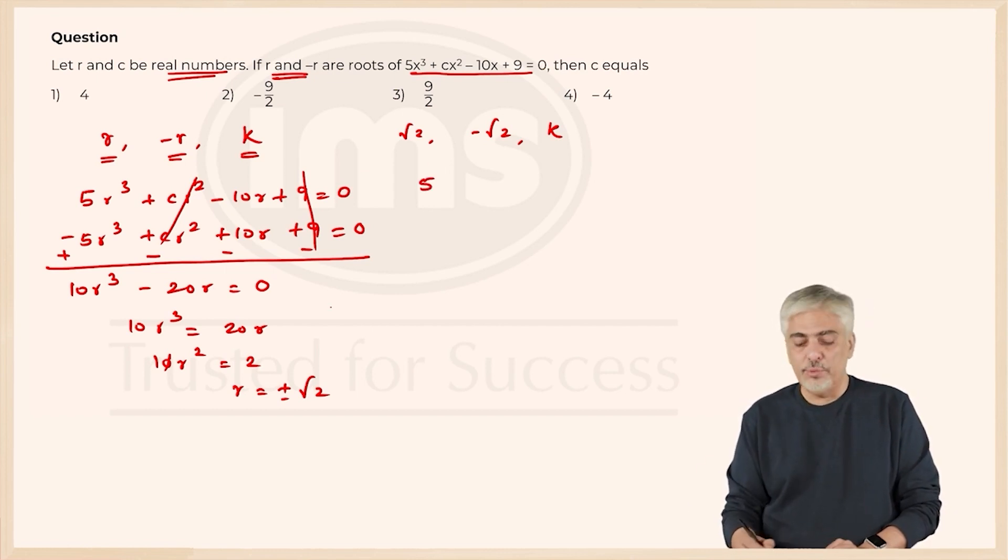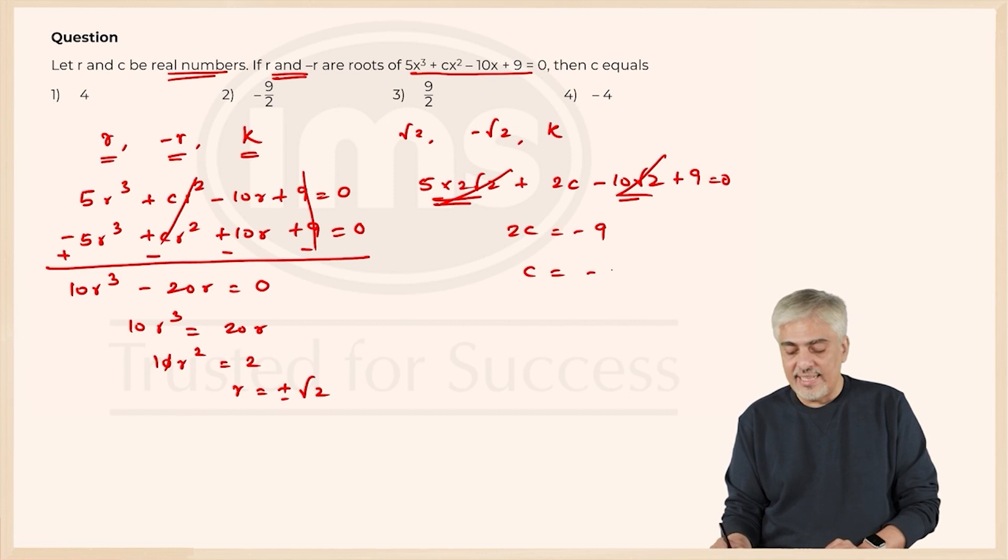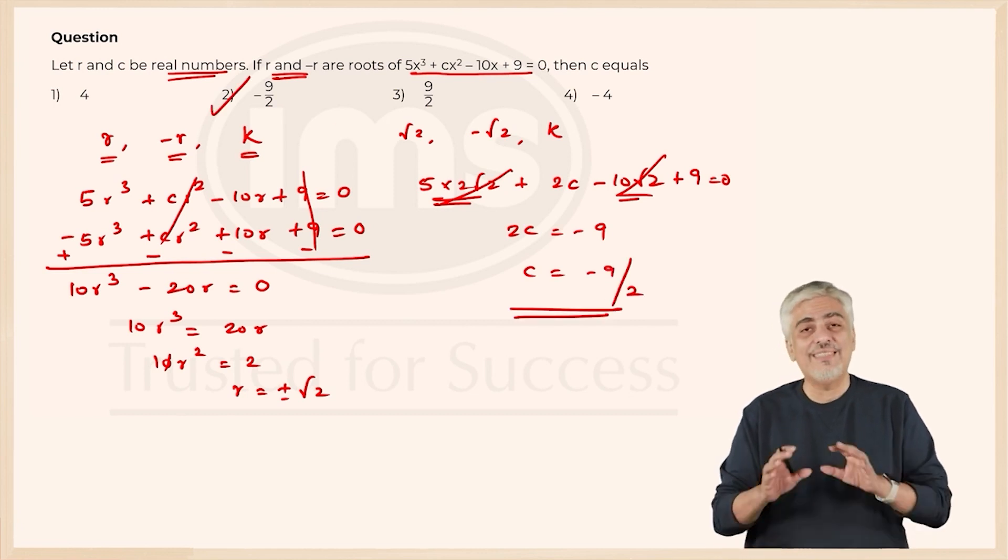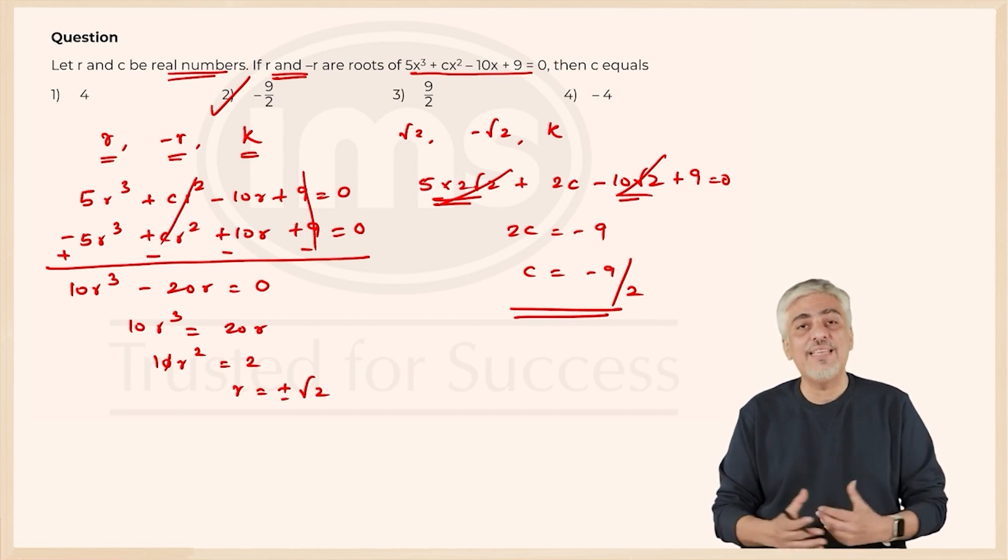So, 5 × (√2)³, that will become 2√2 + c × (√2)², that will be 2c - 10 × √2 is -10√2 + 9 = 0. This is 10√2 - 10√2 cuts out. So, 2c = -9 and c = -9/2, which is the second option and this is the approach which I remember using in the exam.